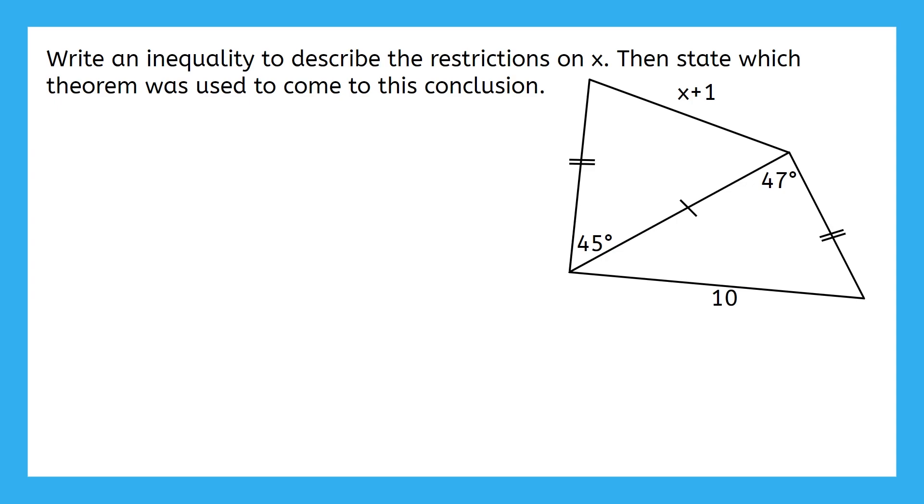Yes, it's the Hinge Theorem. We have two sides of this triangle and an included angle of 47 degrees. And those two sides are congruent to these two sides. But here the included angle is a little smaller, at only 45 degrees. The side across from the 47 degrees will be longer than the side across from the 45 degrees. Therefore, we can write that x plus 1 is less than 10.